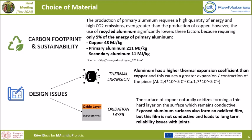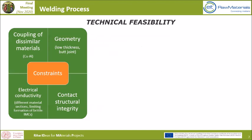So this was a short overview of the main consequences of this choice of material. There are some undeniable advantages but also some big issues that need further discussion. As far as the practical aspects and technical feasibility of these components are concerned, we have some design constraints. First of all, we have to couple two dissimilar metals: copper and aluminum. We need to respect a certain geometry, so we are talking about low thicknesses, and the type of joint is a butt joint. During the coupling, electrical conductivity needs to be maintained so the performances should be guaranteed.